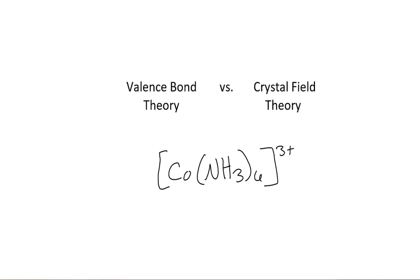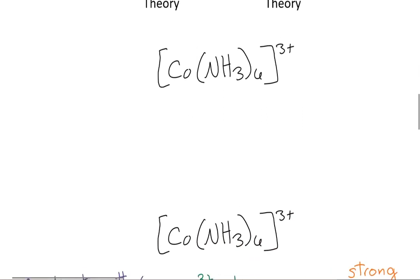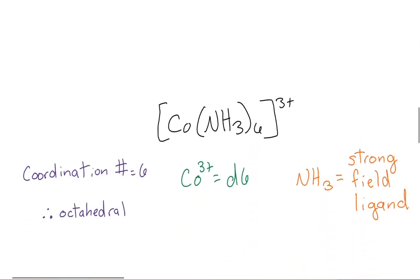First, let's discern a few things from the complex ion before we build these diagrams. Ammonia is a monodentate ligand, so it will only take one bond space. So with six of these ligands, we can tell that our cobalt ion has a coordination number of six, making the shape an octahedral.